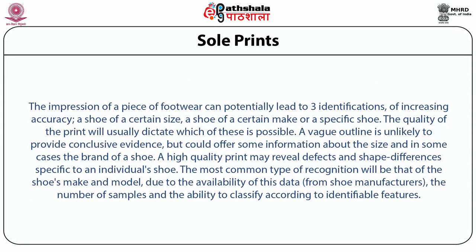The impression of a piece of footwear can potentially lead to three identifications of increasing accuracy: a shoe of a certain size, a shoe of a certain make, or a specific shoe. The quality of the print will usually dictate which of these is possible. A vague outline is unlikely to provide conclusive evidence but could offer some information about size and in some cases the brand of a shoe. A high quality print may reveal defects and shape differences specific to an individual shoe. The most common type of recognition will be that of the shoe's make and model due to the availability of this data from shoe manufacturers and the ability to classify according to identified features.